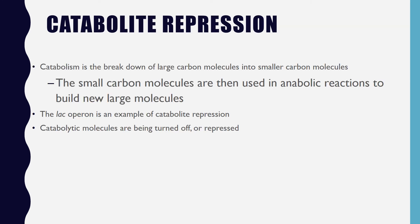The lac operon is an example of catabolite repression. Remember that catabolism is the breakdown of large molecules into smaller molecules. I like to think that a cat will break things, and 'cat' sounds like 'catabolic.' The lac operon codes for proteins that have catabolic properties — they break down lactose, a disaccharide, into glucose and galactose, monosaccharides. Therefore, the lac operon is under catabolite repression, because when the operon is in the off state, the catabolite process of breaking down lactose is inhibited.